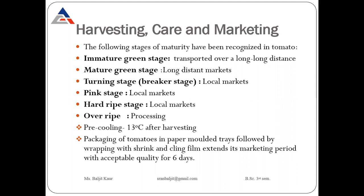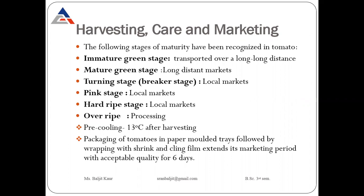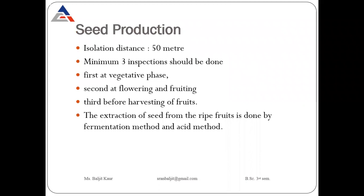Pre-cooling is done in tomatoes at 13 degrees Celsius after harvesting. Methods of pre-cooling include dipping fruits or vegetables in cold water, sprinkling water over vegetables, hydro-cooling, or vacuum pre-cooling. Methods are different for different crops. Then packaging of tomatoes is done in molded trays followed by wrapping with shrink or cling films, which can extend the marketing period with acceptable quality for six days.